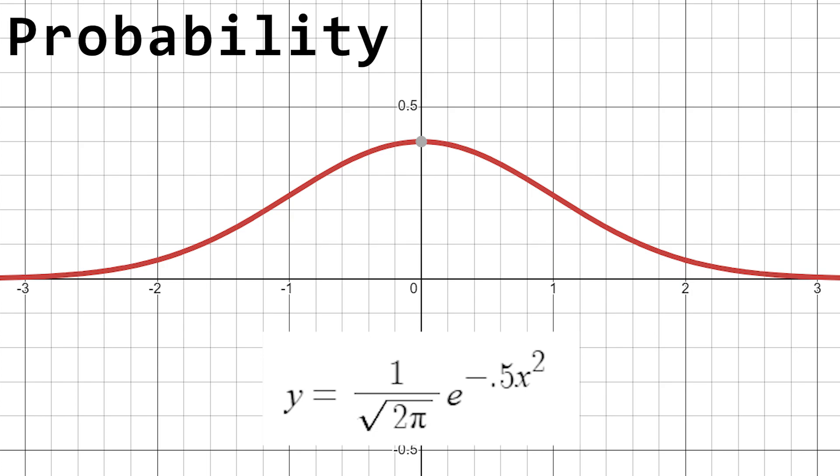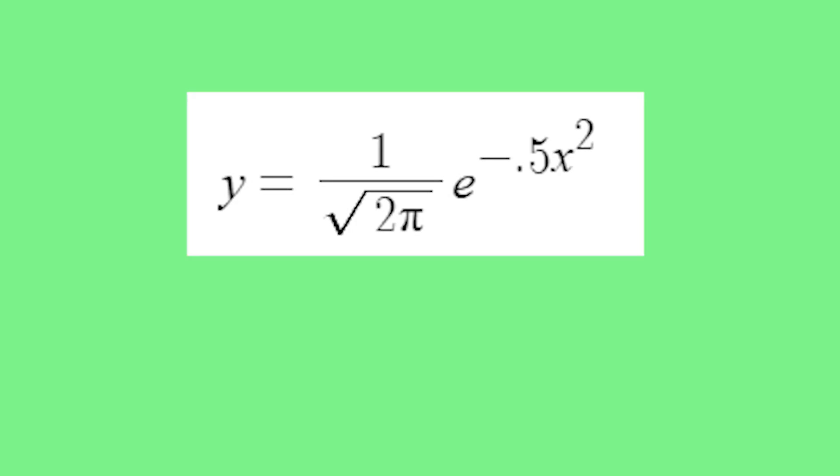And much like all of our other normal distributions, it is what's known as a probability density function. Oh, and if you're curious as to where the π comes from, I'll have some links in the description, but it's a bit out of the scope of this video.